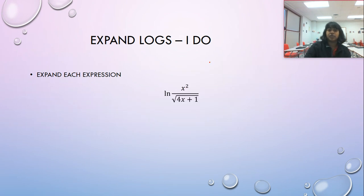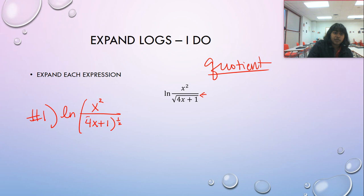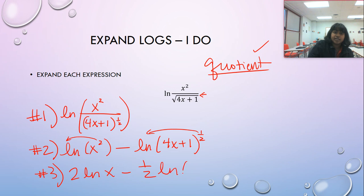Let's expand one more — this one is truly the quotient rule. Step one: convert the square root to its exponent form, giving the natural log of x squared over 4x plus one, all to the one half. Step two: apply the quotient rule to get the natural log of x squared minus the natural log of 4x plus one to the one half. These are power rules, so we drag them forward: two times the natural log of x minus one half times the natural log of 4x plus one. That is our answer.